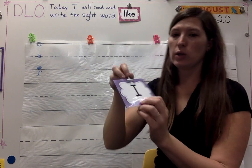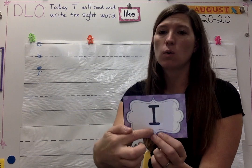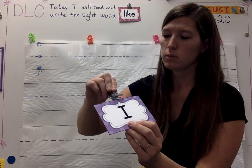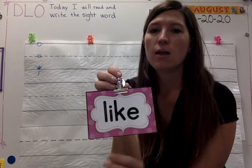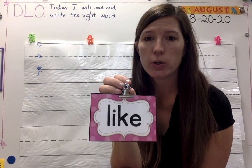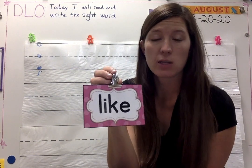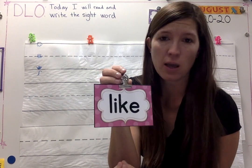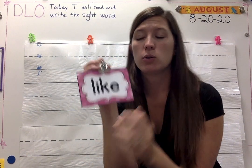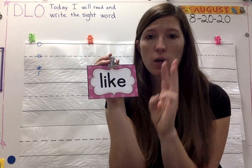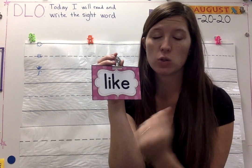Earlier this week we learned 'I,' and when 'I' is a sight word it's always capital. Our new word today is like. We used that the last couple of days in our sentences with 'I,' because we knew this was our second sight word, so we just used them together — so you're already familiar with it. I'm going to read it and spell it three times with you. I'll go first and then you'll do it with me.